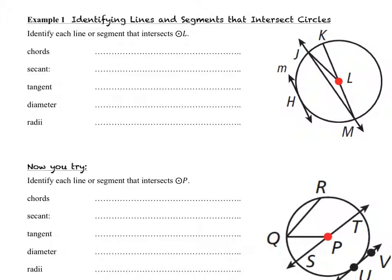Alright, let's talk about chords. Remember, chords are segments that go through a circle and intersect the circle at two points. And we've got two of them: segment KM and segment JM. There is one secant, and it is line JM. And the difference between the secant and the chord, of course, is that a chord is a segment and a secant is a line.